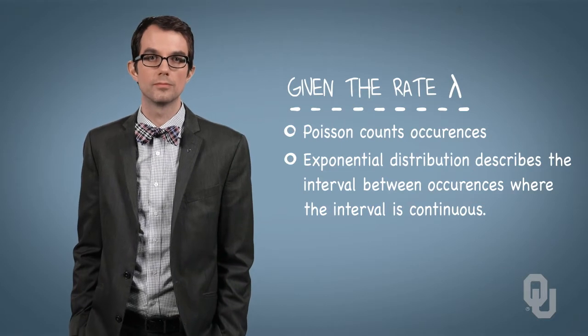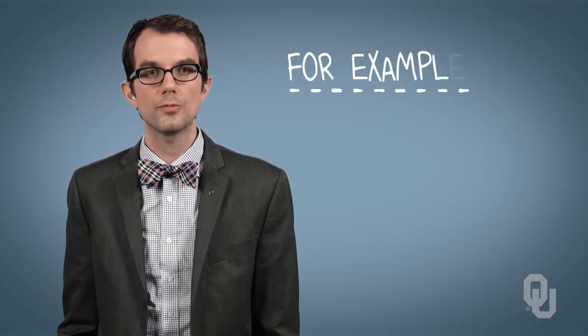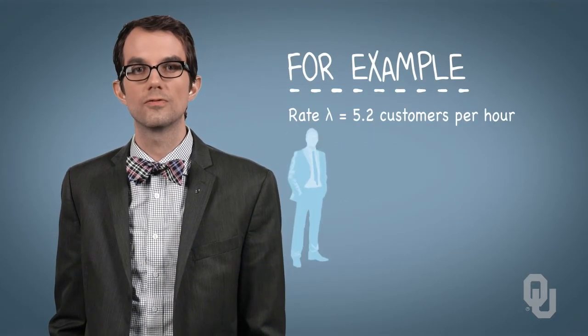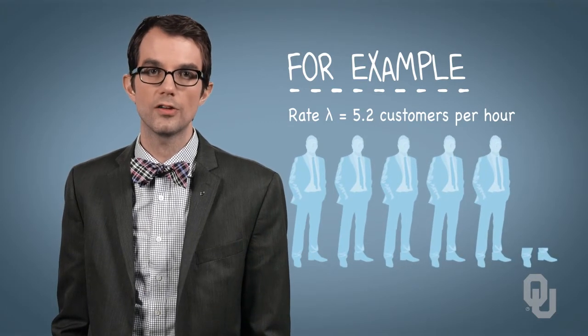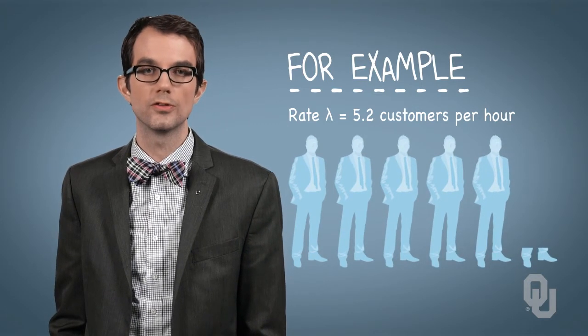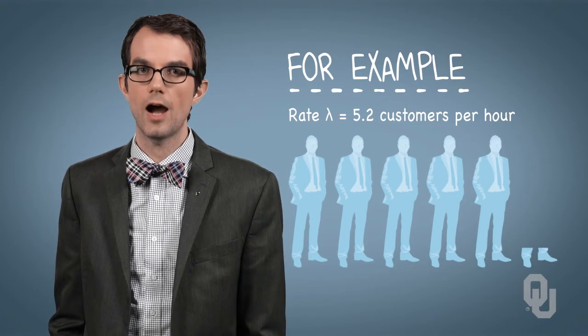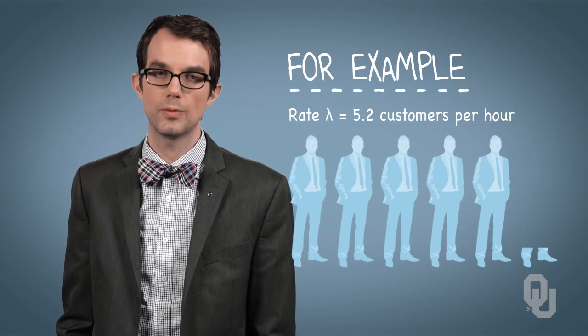For example, if customers arrive with rate lambda equals 5.2 customers per hour, the number of customers arriving in an hour follows a Poisson distribution, while the hours between arrivals follows an exponential distribution.